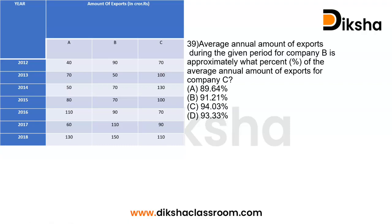Moving to the next question: the average annual amount of export during the given period for company B is approximately what percent of the average annual amount of exports for company C? So we want to consider the whole table, find the average annual export of company B during 2012 to 2018, then find the average annual export of company C, and determine B as a percentage of C.